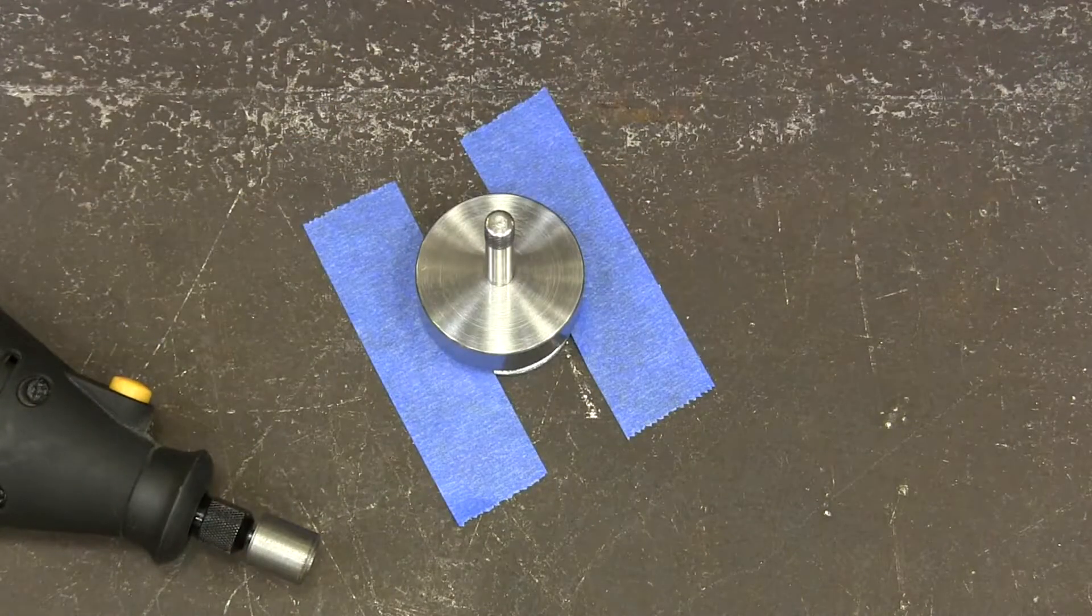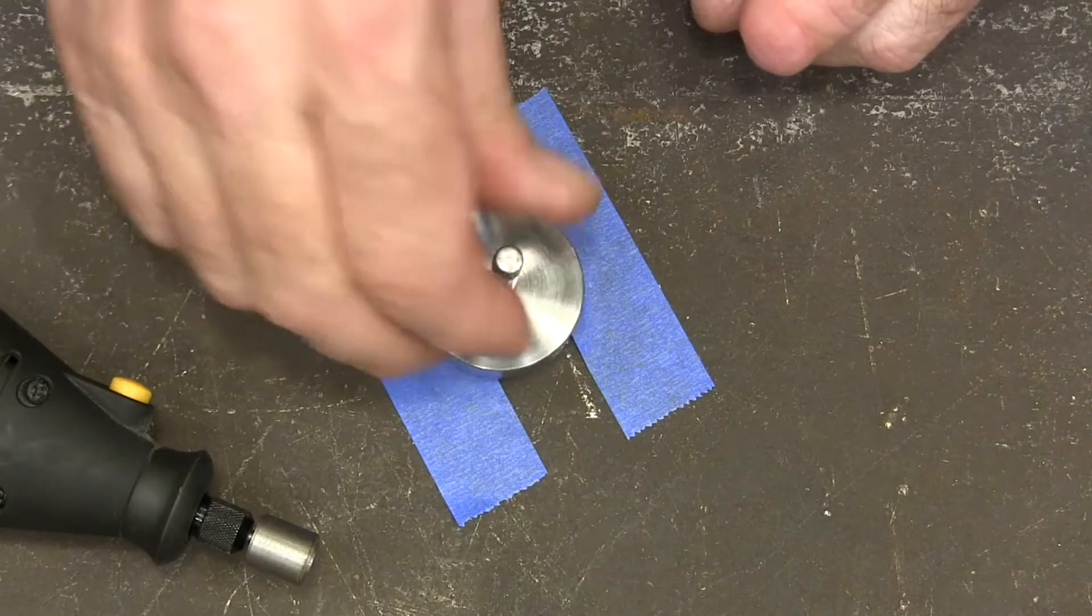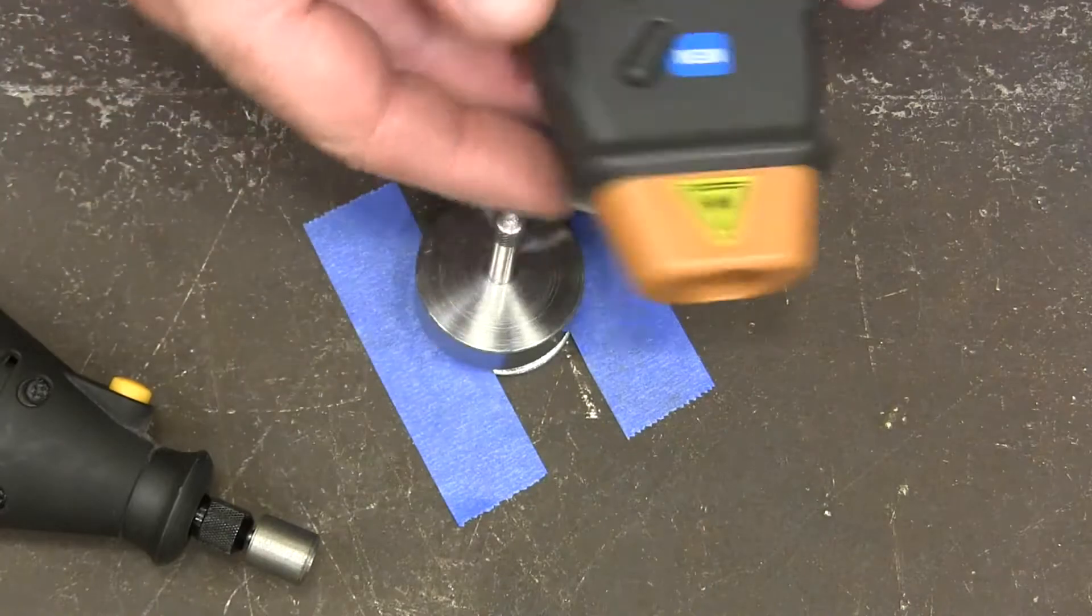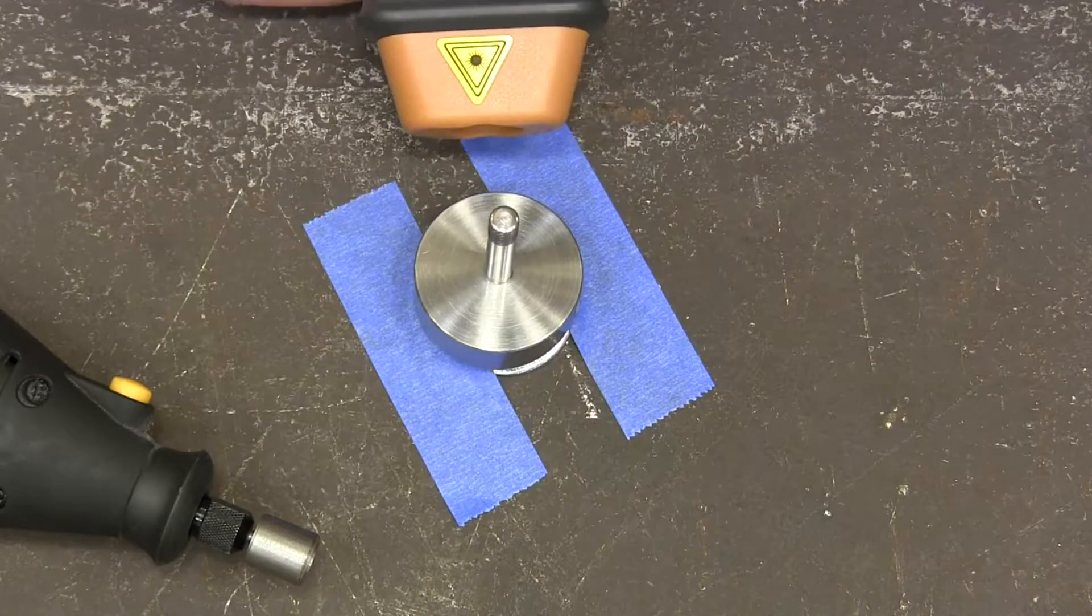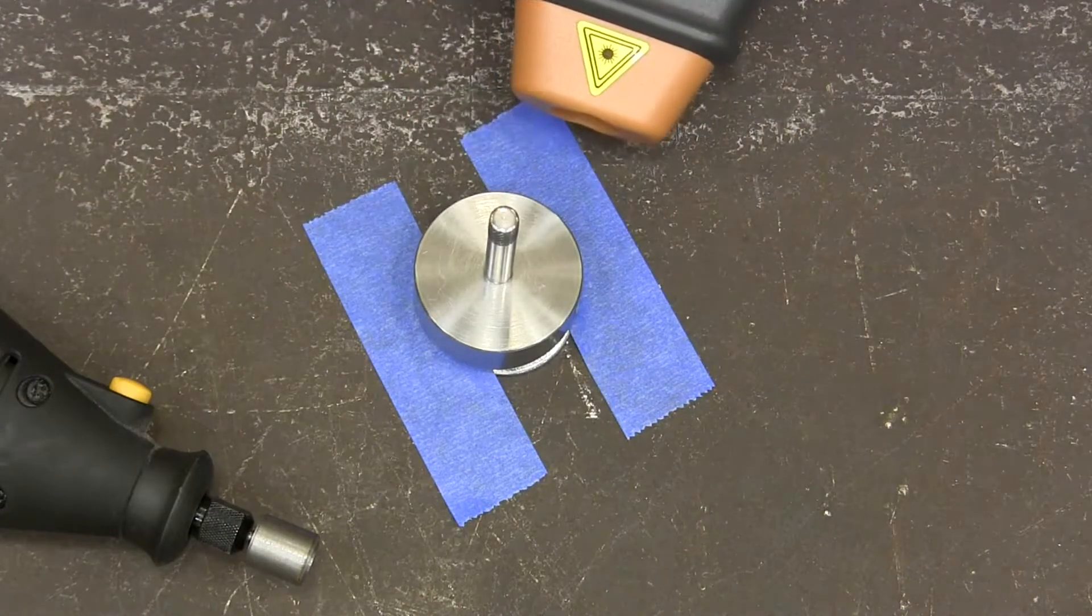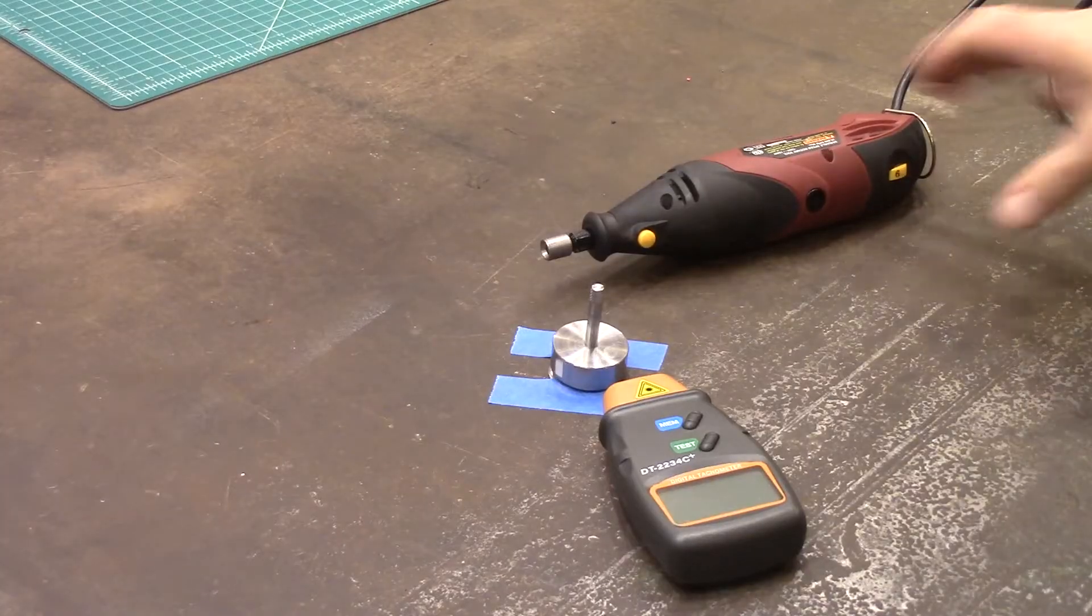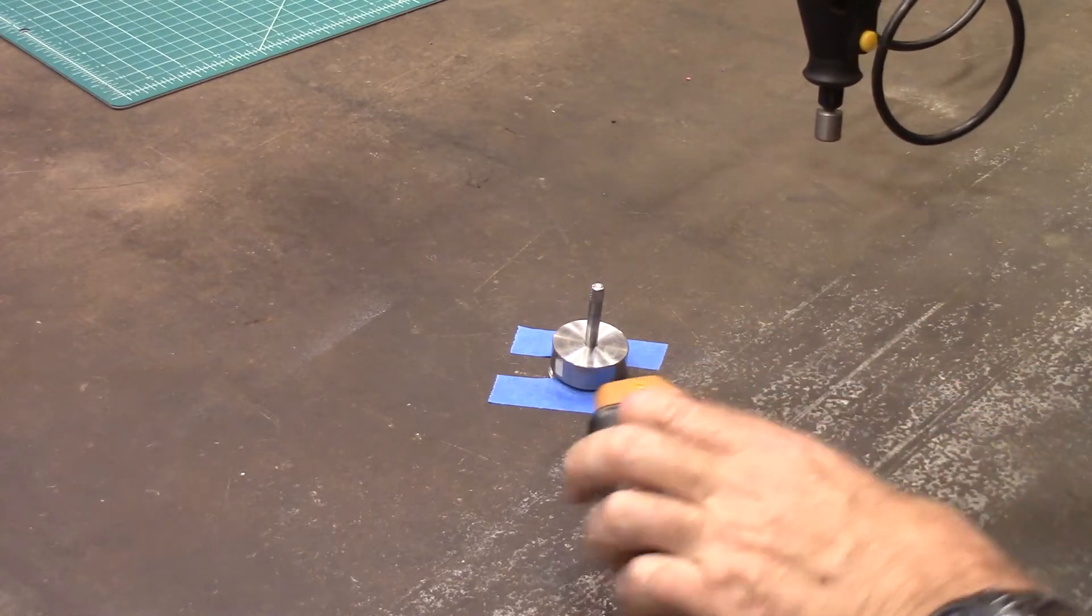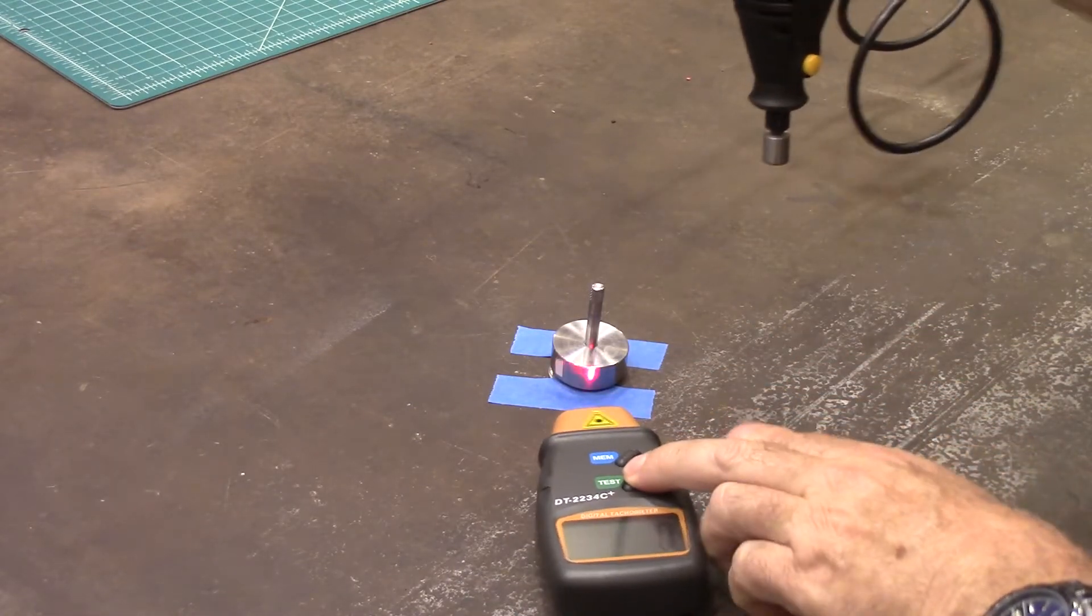Just to kind of get a little bit of grip. And then I've got a tachometer here that I can test the speed. All right, so let's spin this thing up and see what we get. Let's see if I can do that.